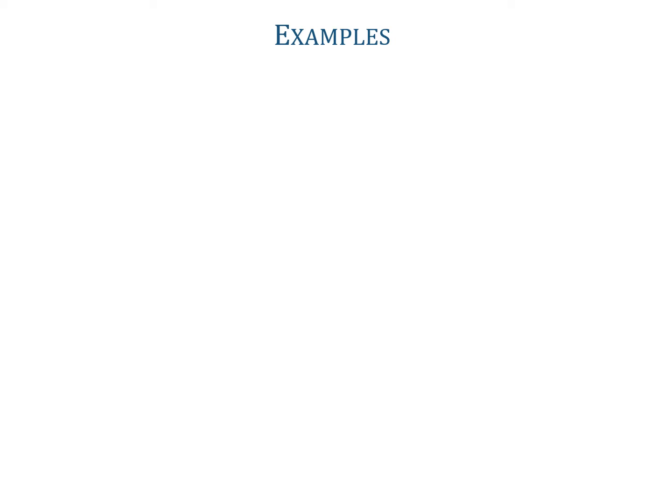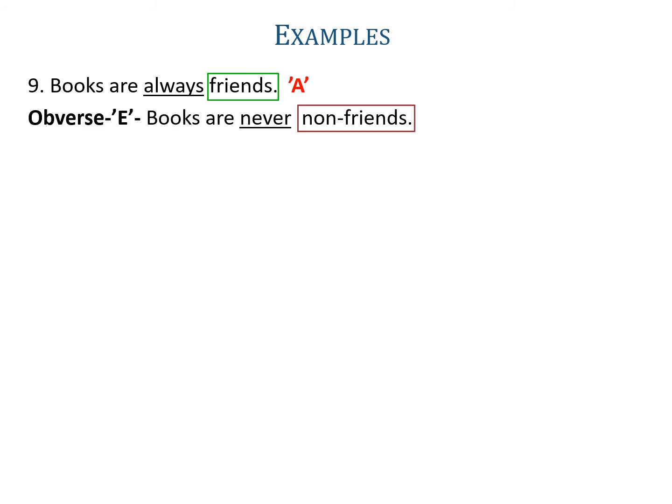Example nine: 'Books are always friends.' The word always is used, so it is an A-proposition. The obverse of A is E, so always becomes never in E. Friends is the predicate of the original proposition, its complementary will be non-friends. So the obverse will be 'books are never non-friends'.